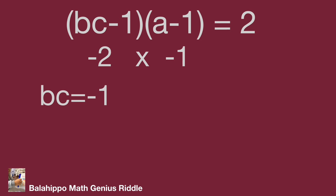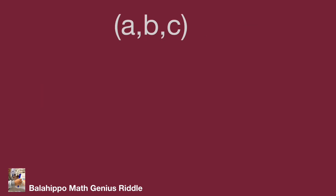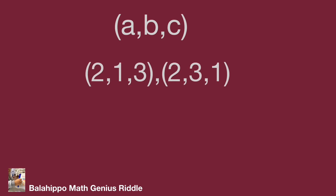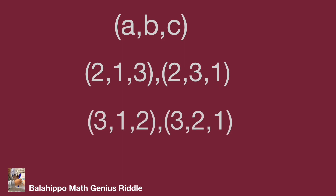So we get all the number groups for abc. They are (3, 2, 1), (3, 1, 2), (2, 1, 3), and (2, 3, 1). That's the result. Do you find that? Hope you enjoy the video. Thank you.